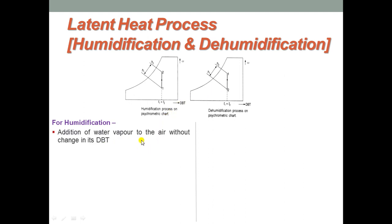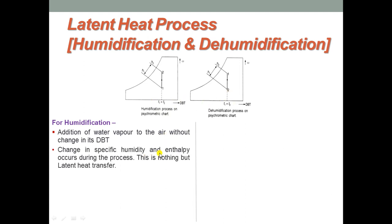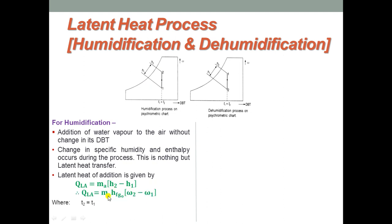For humidification, water vapour is added to air without change in dry bulb temperature. Change in specific humidity and enthalpy occurs. The latent heat of addition is Q = ma × (H2 − H1), which can also be written as ma × HFG0 × (ω2 − ω1), where HFG0 is the latent heat of vaporization at 0°C. The heat present in the air itself is used to evaporate the water vapour.